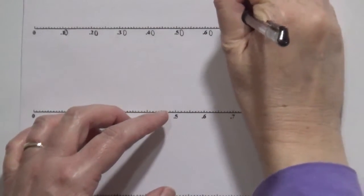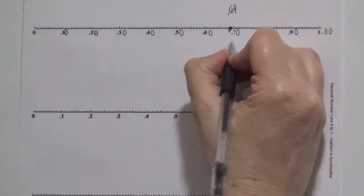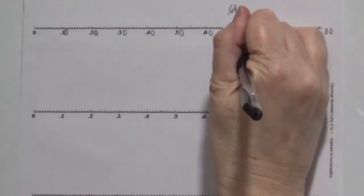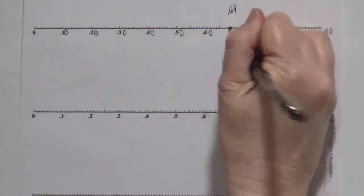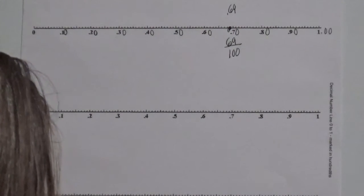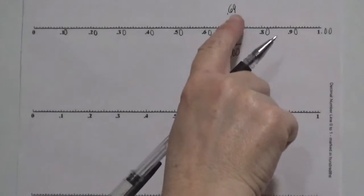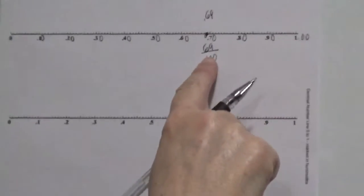So it's going to be the decimal of 69, and then it's going to be the fraction of 69 out of 100, because it says that you need to represent the fraction and the decimals. And we're representing the decimal and the fraction, the decimal and fraction of 69 hundredths.